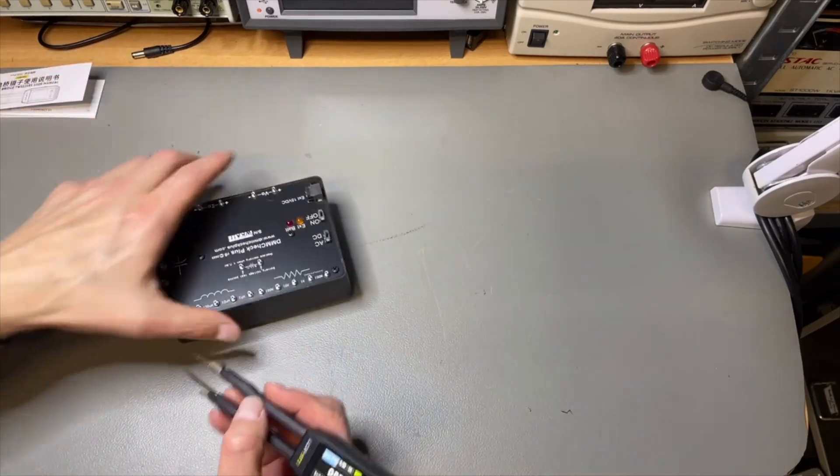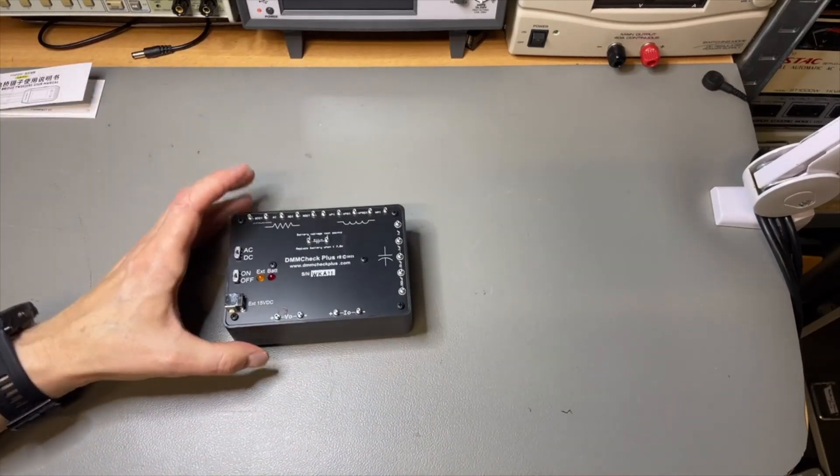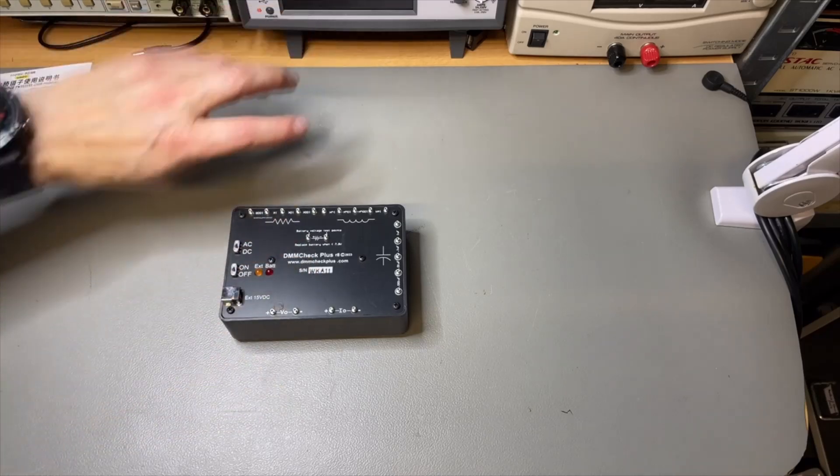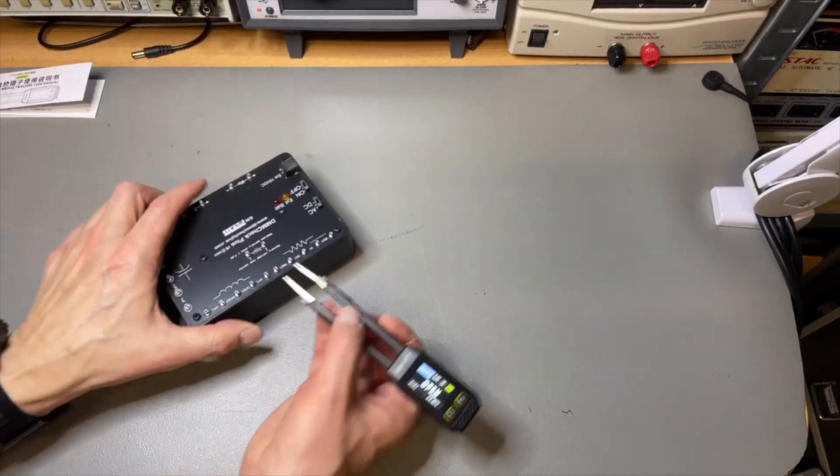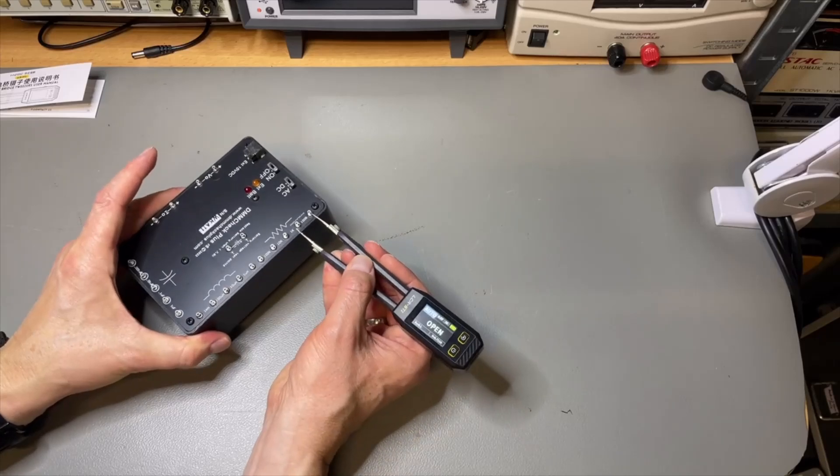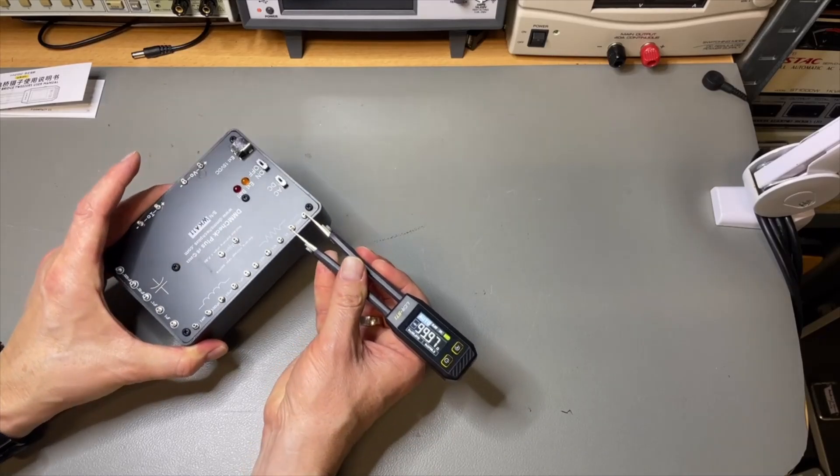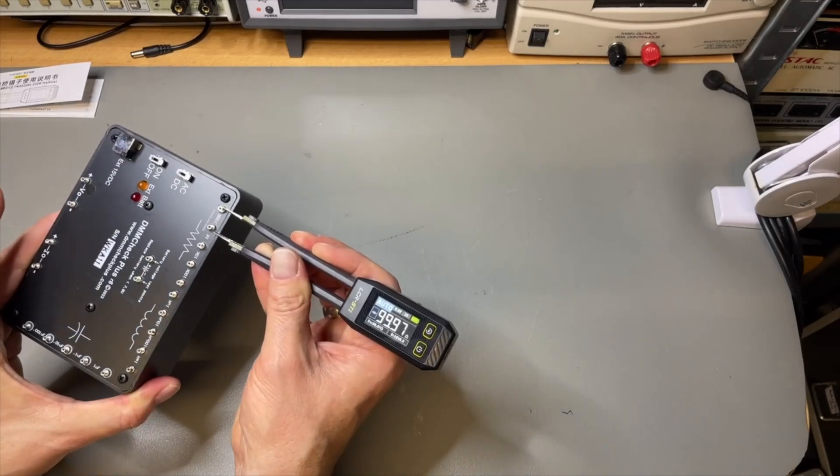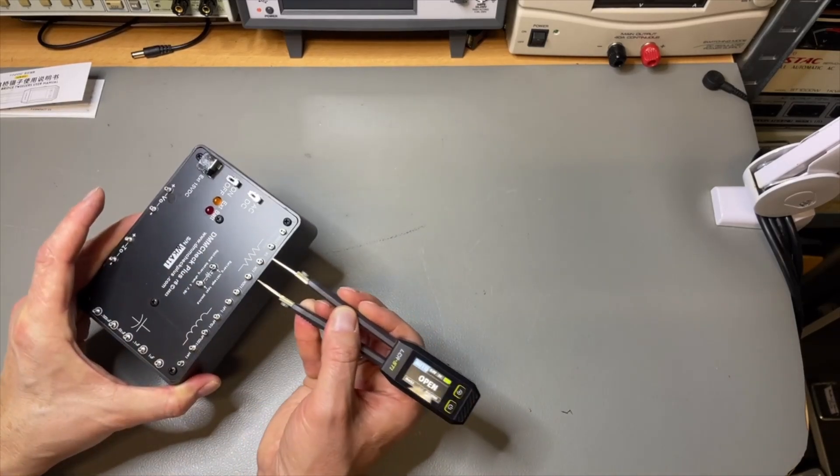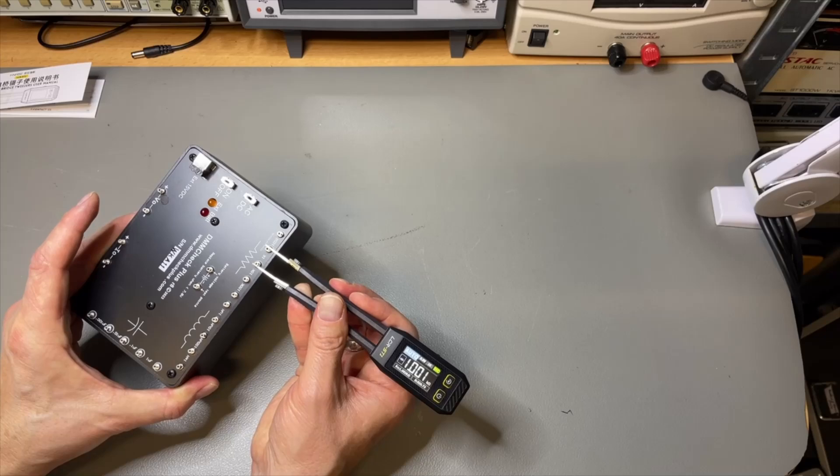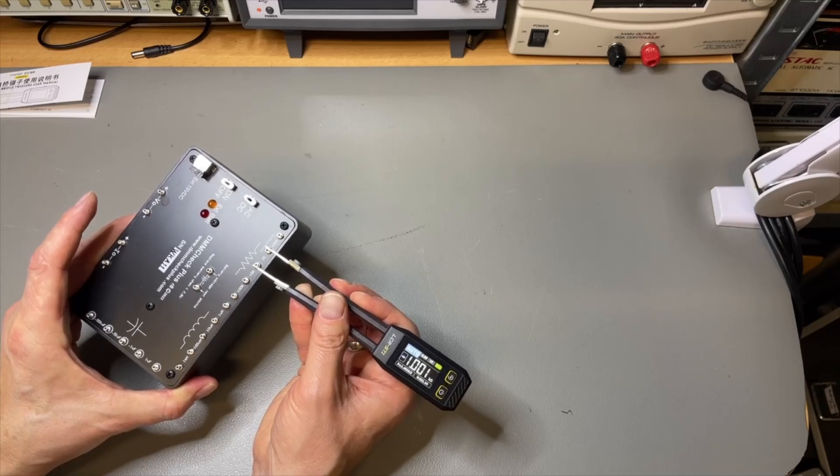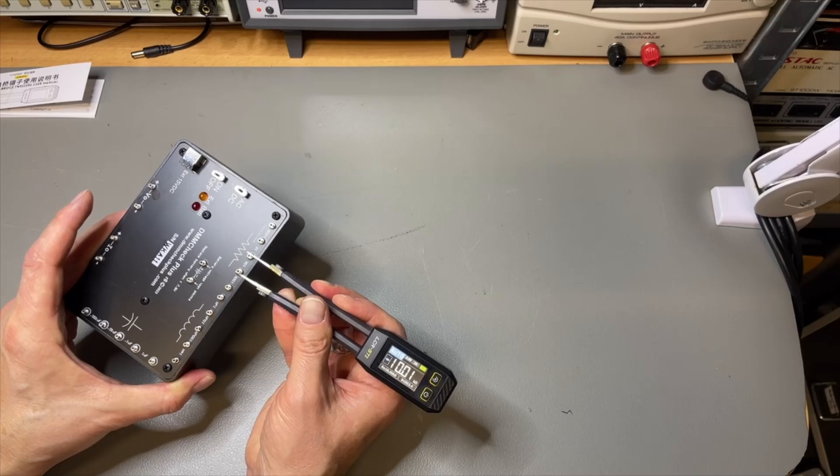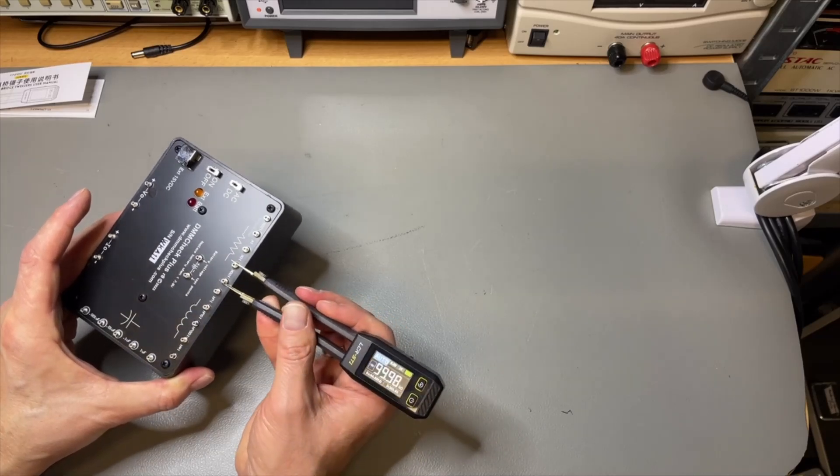Let's do some resistor tests. This is, by the way, the DMM Check Plus revision. I have a video about this - if you are interested in it, I have also discount codes. But let's do some measuring here. This should be 100 ohms. We are very close. 1k, look at that. 10k. And 100k.